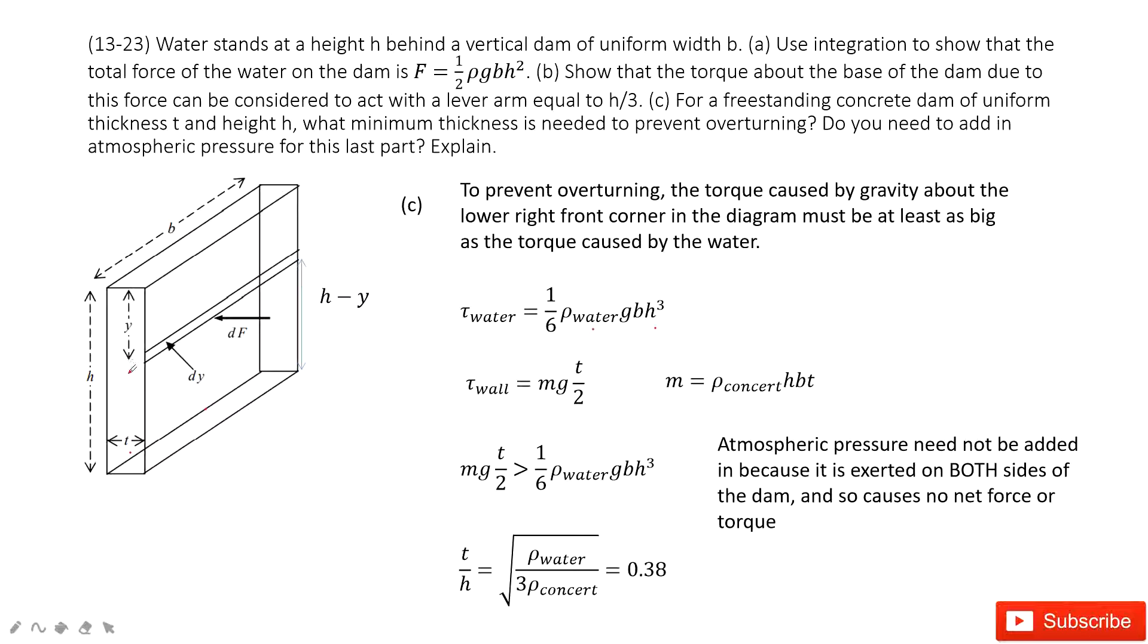Of course, we know where the gravity is because this is uniform distributed concrete. The center of mass is there. Agreed? So gravity pointing down this way, and then the torque from this gravity to this rotation axis, this side, is t over 2. Agreed? So it becomes gravity times t over 2. This is the torque from the concrete, the wall.